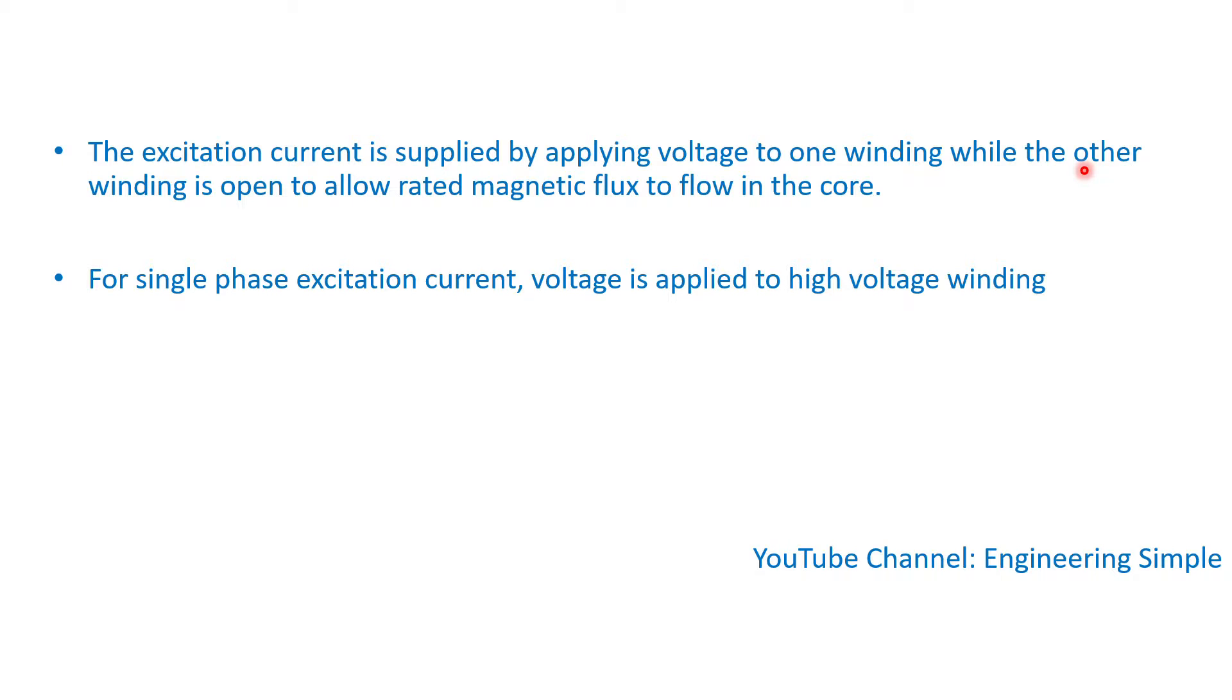For single phase excitation current, voltage is applied to high voltage winding. For three phase excitation current, voltage is applied to the low side, and the reason being is because the low side has lowest voltage.